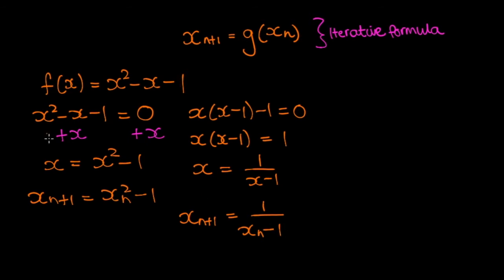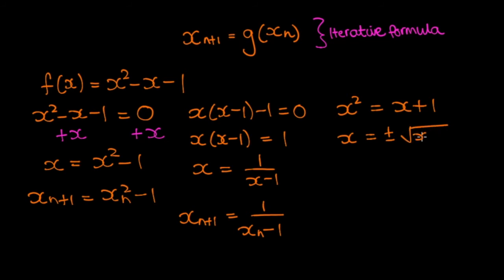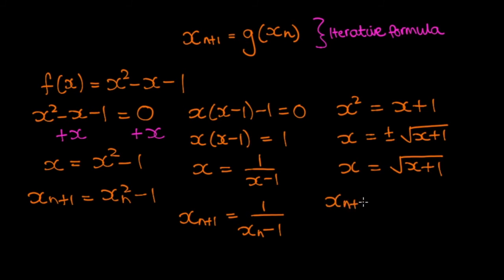Let's manage one more rearrangement. Adding x + 1 to both sides gives x² = x + 1. Taking the square root of both sides: x = ±√(x + 1). For our purposes, let's only consider the positive square root, so x = √(x + 1). Our iterative formula becomes x_{n+1} = √(x_n + 1).